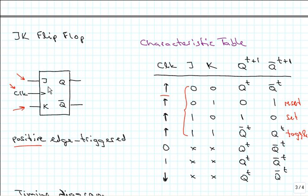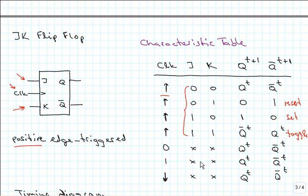The JK flip-flop is in some sense a cross between a D flip-flop and a T flip-flop, with the ability to directly set or reset the data, or toggle between Q and Q-not outputs. As with the other two, when the clock is static — either at zero or one — it does not matter what J and K are and the flip-flop retains its current state. Similarly, a down transition on a positive edge-triggered flip-flop will not cause a reaction and the output stays the same as it was at time t.